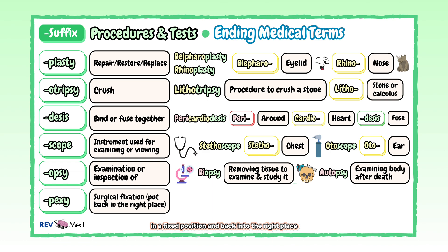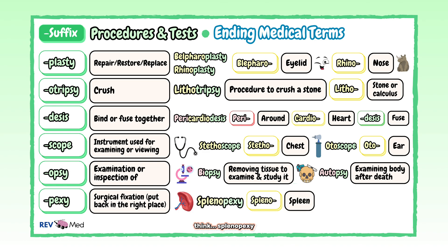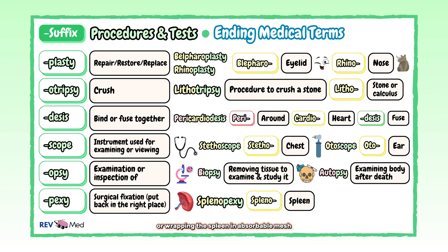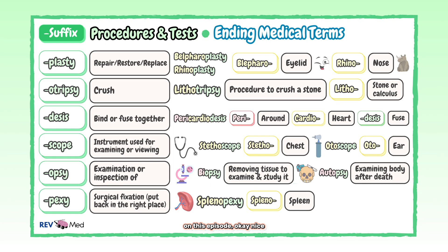Think splenopexy, which is the process of creating an extra peritoneal pocket or wrapping the spleen in absorbable mesh and anchoring it to the retroperitoneum. You're definitely learning some crazy things in this episode.